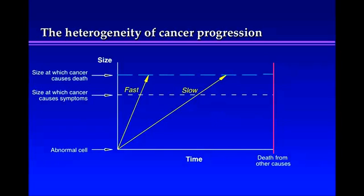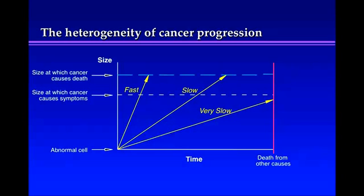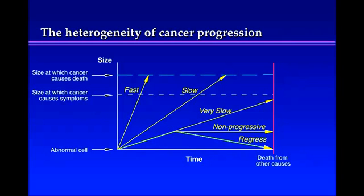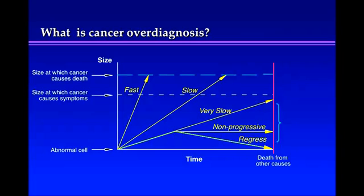This is a very slowly growing cancer. It is in fact growing, but it's growing so slowly that it never causes symptoms before the patient dies of other causes. This became very clinically evident to us in prostate cancer in older men. Now here's something you might find hard to understand. Here's a cancer — or something that meets the cellular definition of cancer — but in fact is non-progressive; it's not growing. Or even more unusual: things that meet the cellular definition of cancer but regress. We now know that happens too.